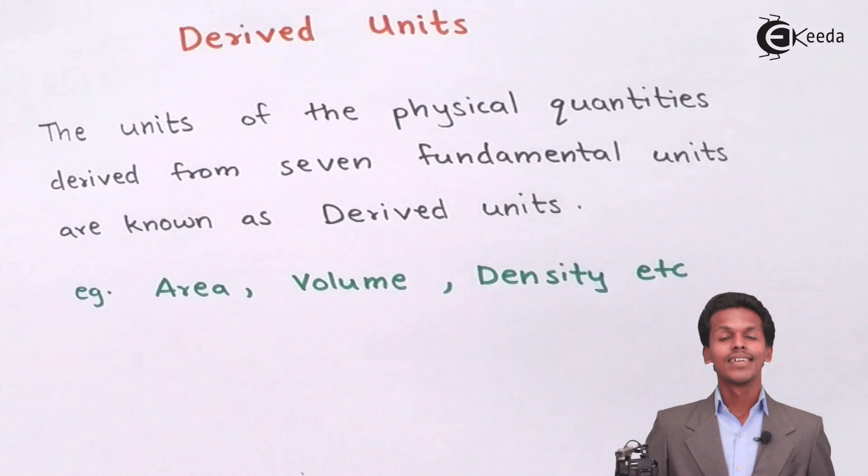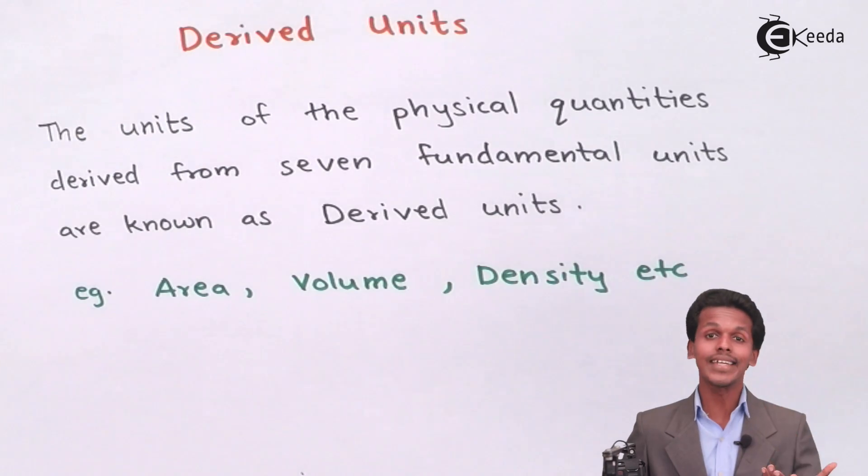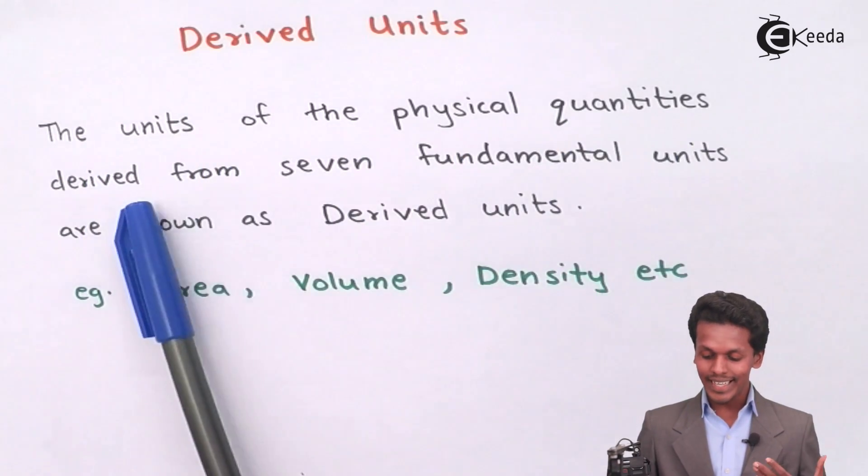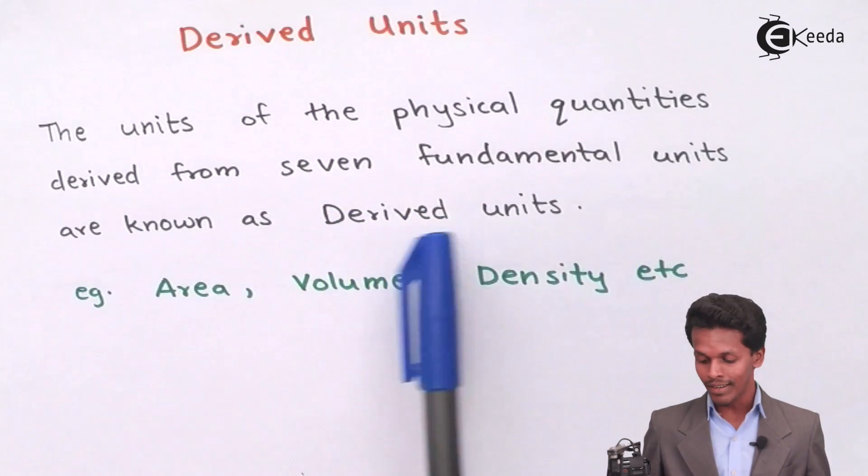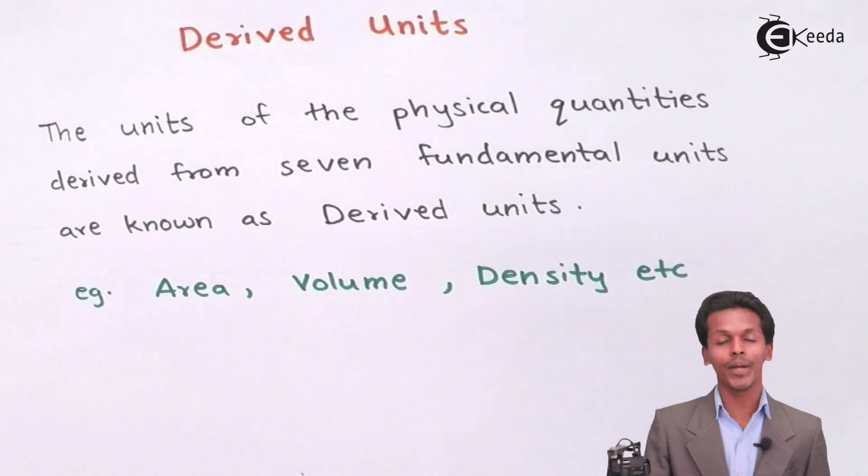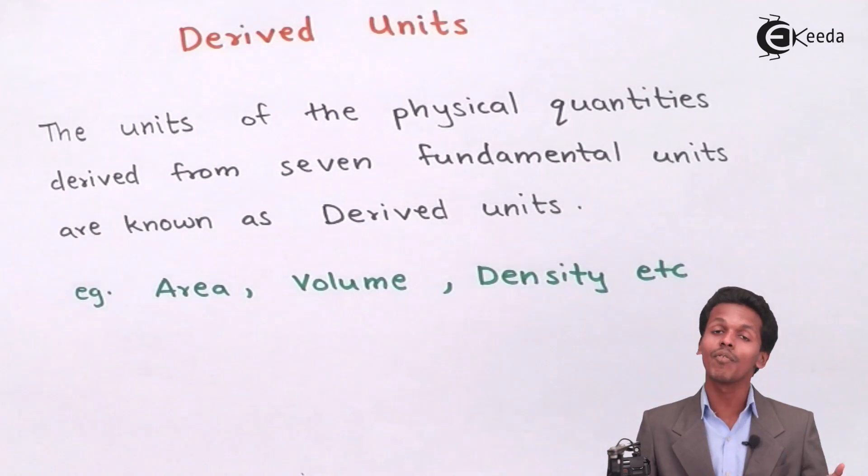Now talking about derived units, what are derived units actually? The units of physical quantities derived from the seven fundamental units are known as derived units. The units that we are going to talk about now will be the units that are derived or used from the seven fundamental units.